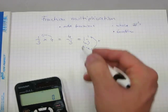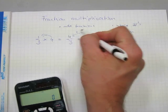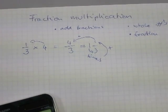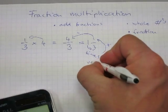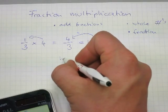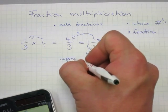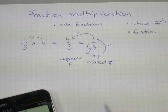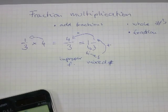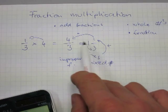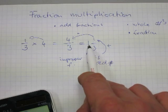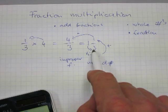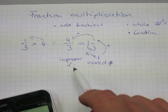Let me zoom in so you can see it better. To convert an improper fraction to a mixed number: four divided by three is one, and you have a remainder of one, because one times three is three, plus one more makes four. So four-thirds equals one and one-third.